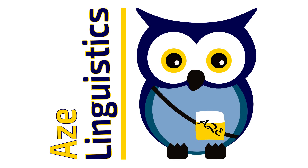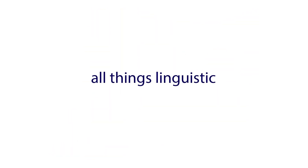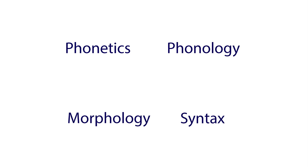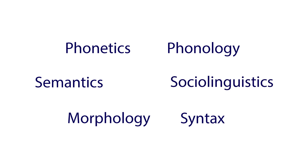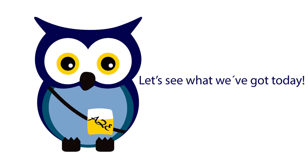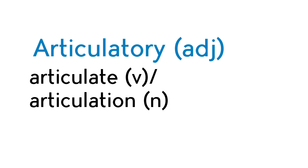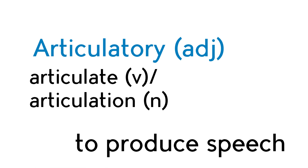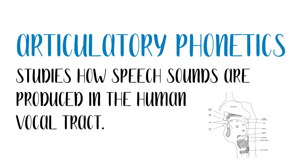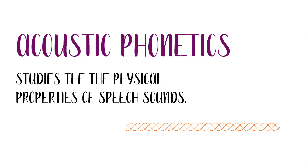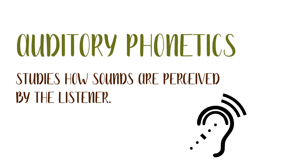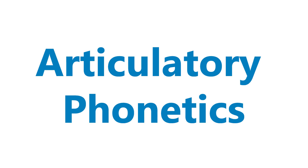Welcome to Age Linguistics. This channel is about all things linguistic, discussing topics in phonetics, phonology, morphology, syntax, semantics, and sociolinguistics. So what is articulatory phonetics? 'Articulatory' is the adjective for 'articulation,' and it means produced speech. You also have acoustic phonetics, which is about sound waves traveling from mouth to ear, and auditory phonetics, which is about hearing sounds. Today's discussion is about articulatory phonetics.